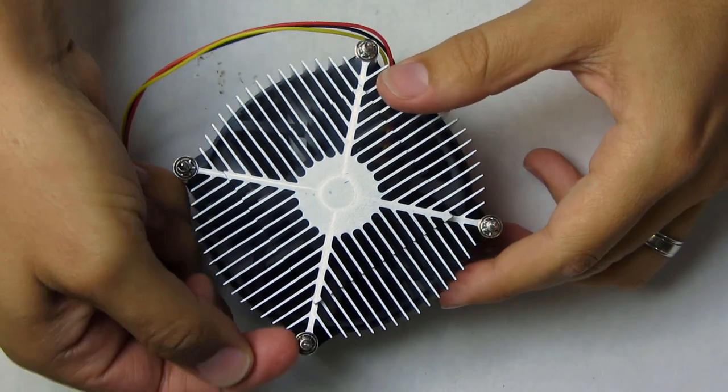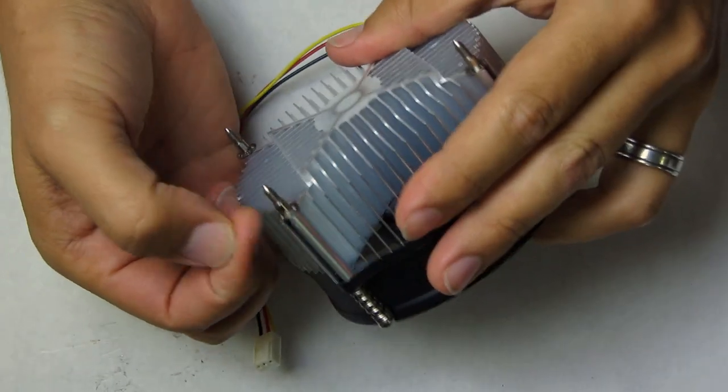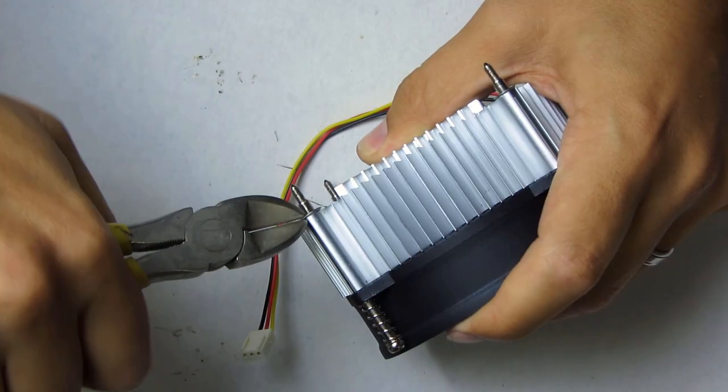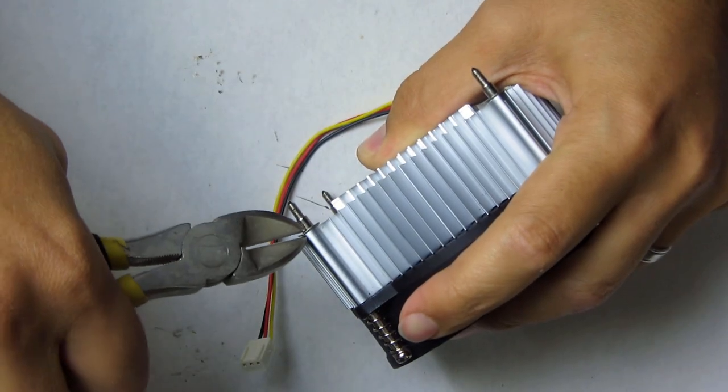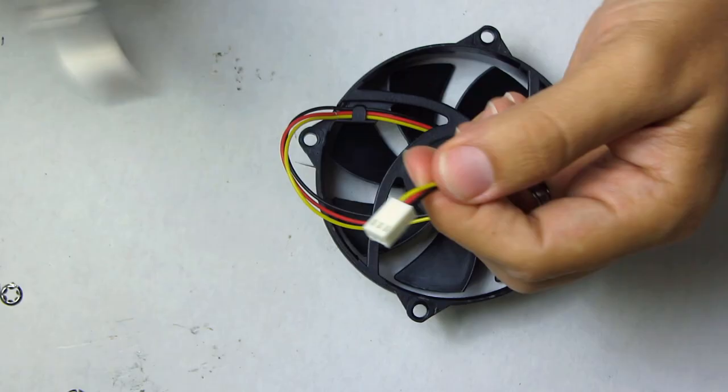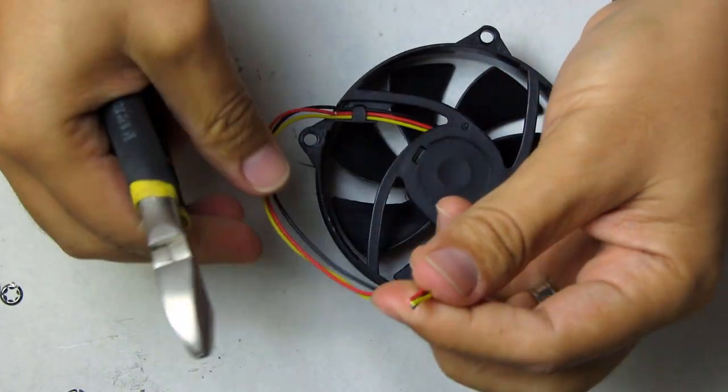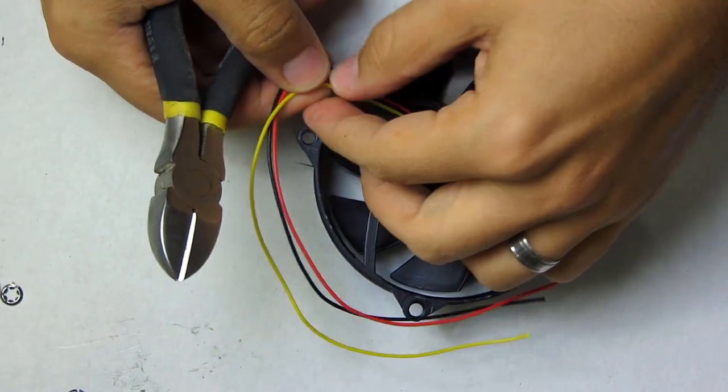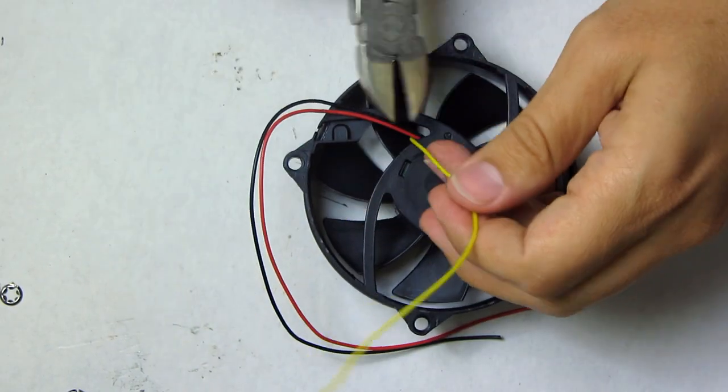Now we can turn our attention to the fan. First we need to separate it from the heat sink. They're held together by these retaining clips so we'll cut those off and the bolt and spring slides right out. We don't need the connector so that can go. In fact the whole yellow wire can go since that's for controlling the fan speed and we won't be using it.